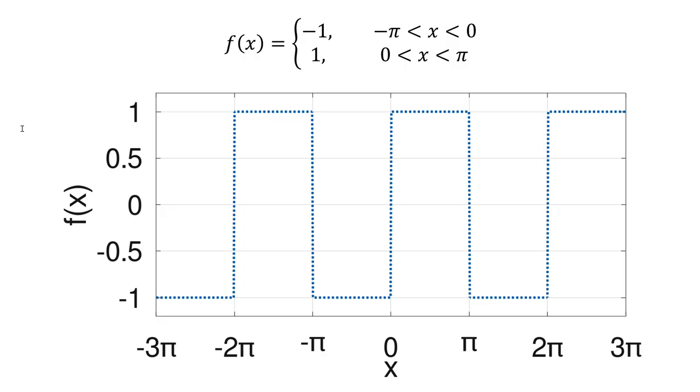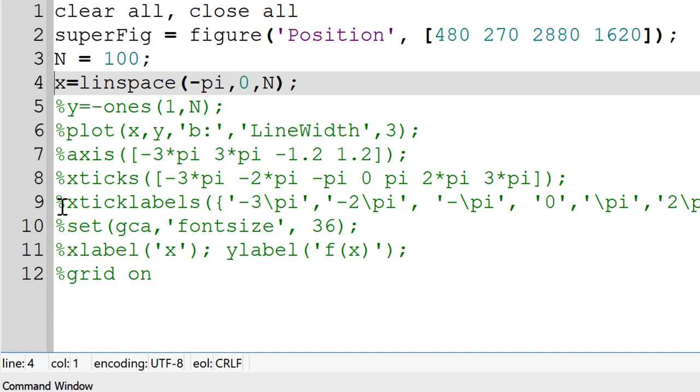Since we can start with minus pi to 0, I can use a built-in function linspace. Since it requires the lower and upper bound, followed by the size of vector, I will use linspace minus pi comma 0 comma n.